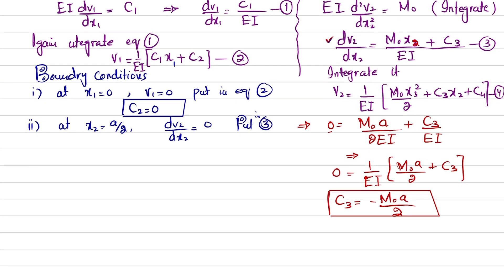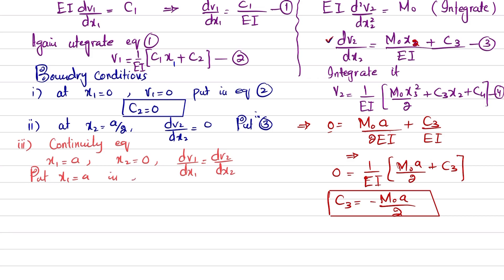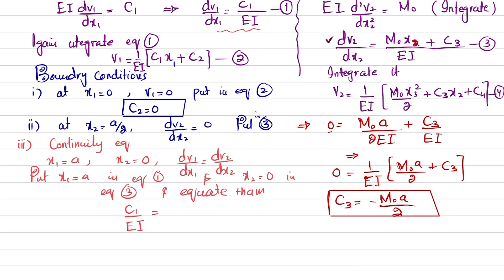Third boundary condition — continuity: at x1 = a and x2 = 0, the slopes must be equal: dv₁/dx₁ = dv₂/dx₂. Substituting x1 = a into Equation 1 gives C₁/EI, and substituting x2 = 0 into Equation 3 gives C₃/EI. Therefore C₁ = C₃ = −M₀·a/2.